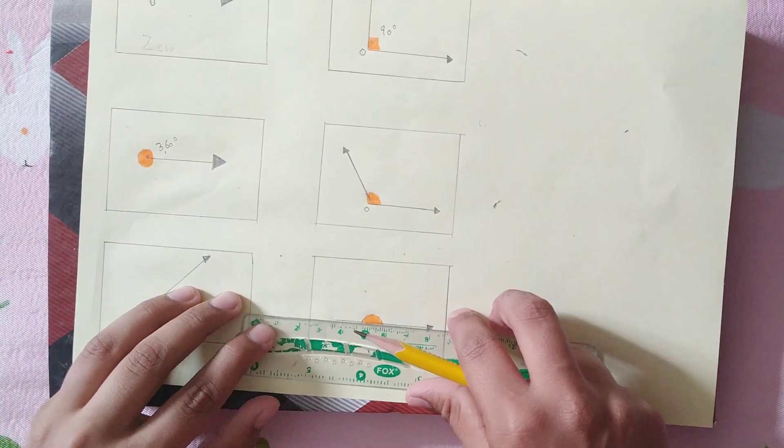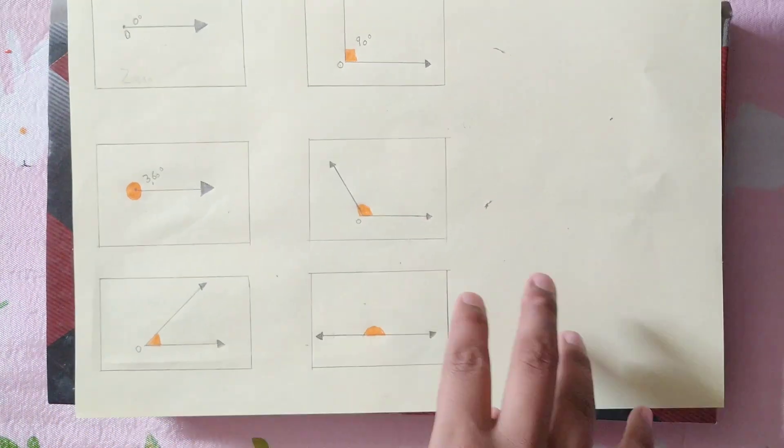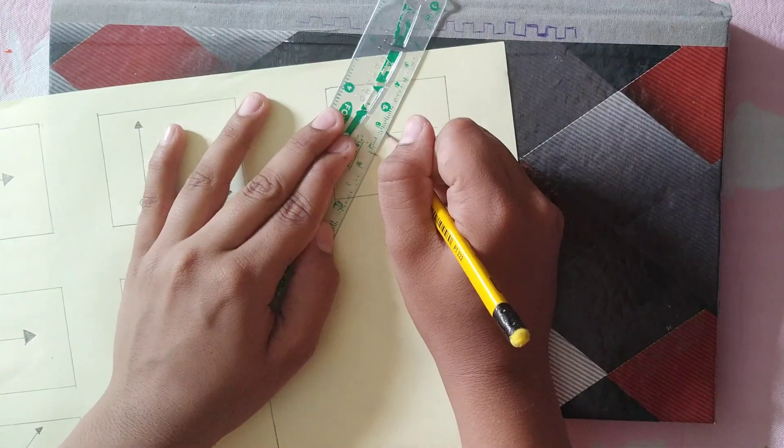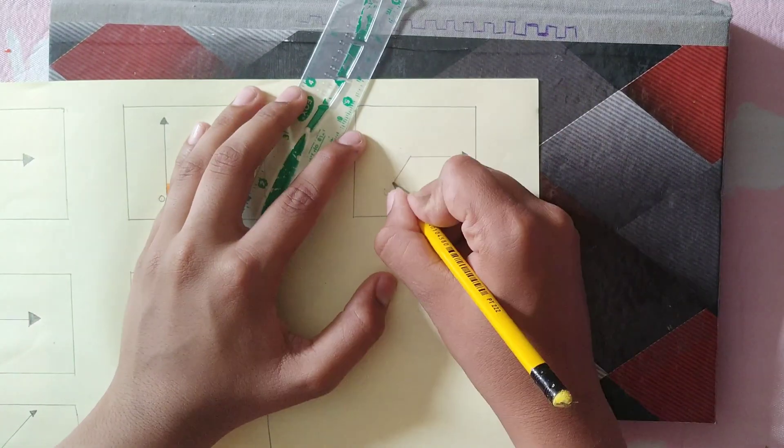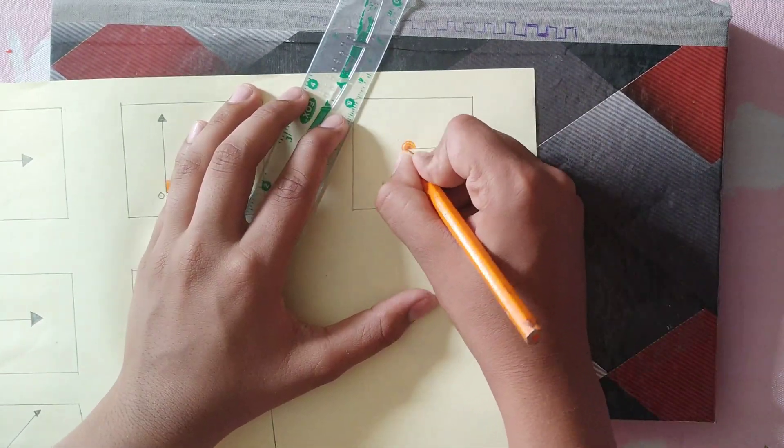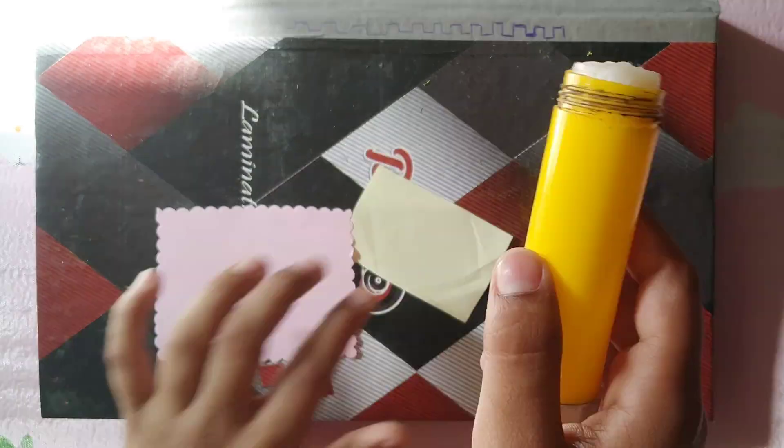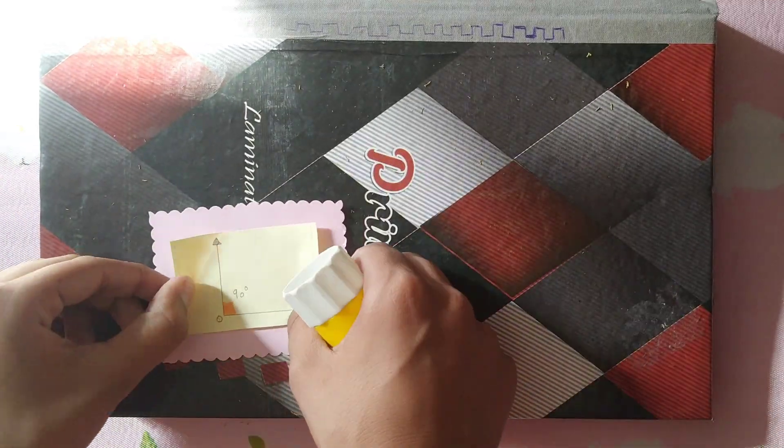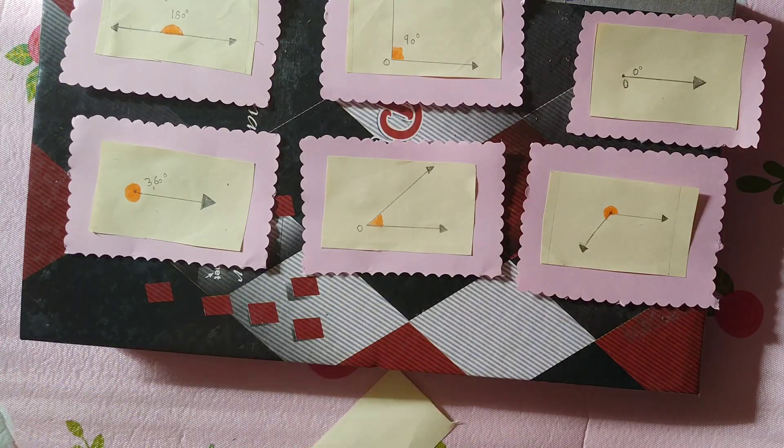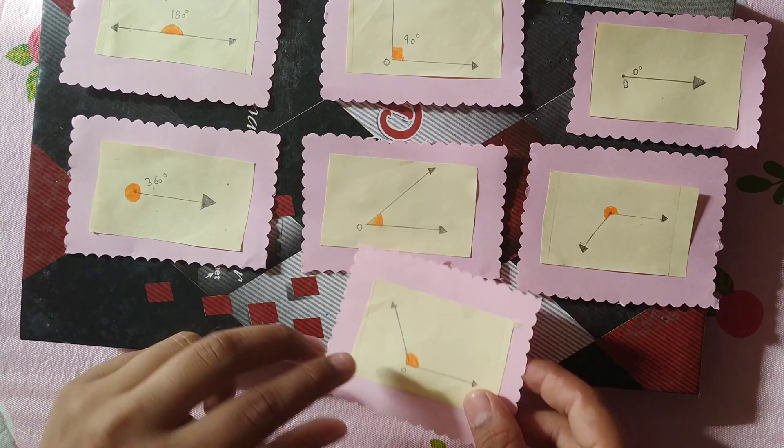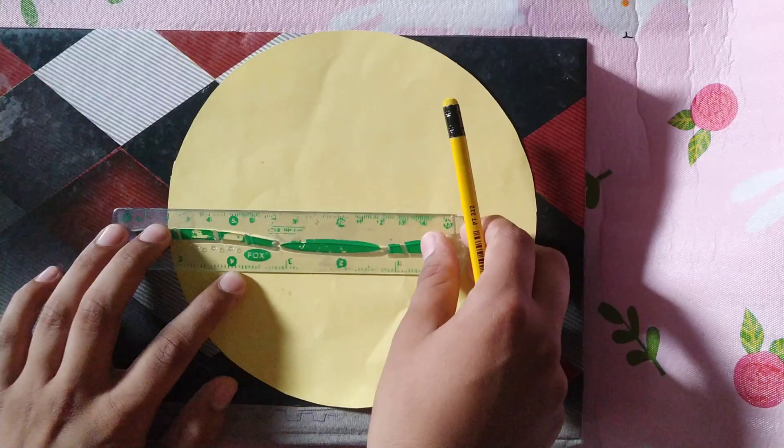Now we have the right angle that is 90 degrees. Now we have the obtuse angle that is bigger than 90. And now we have the straight angle which is 180. Then we have the reflex angle and that is the last angle. So now we are going to cut it and then paste it to this pink paper. And then now you can see it's looking very neat. So now we are done.